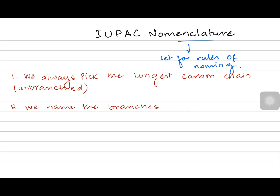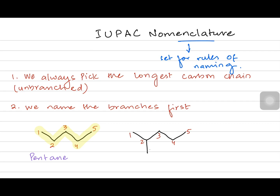Let's have an example. Imagine I have the skeletal formula for two structures. The first one is a skeletal formula of a five-carbon chain which has no branches — you can see it is a continuation with no other carbon coming out as a branch. The name of this structure should have no branch. But in the second structure, there are five carbons in continuation but there's a branch coming out from carbon number two.